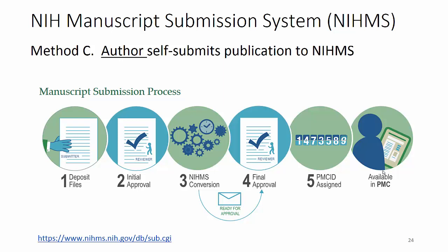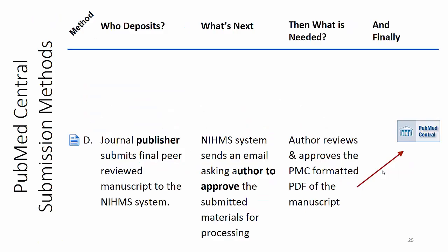Method D is somewhat similar to Method C — it's all about the NIH manuscript system, except you're probably not going to be involved in this one because the journal does the initial deposit. Just like with C, the author reviewer has to go in and approve that submission. The conversion happens, the author gets emailed again to make sure it's formatted exactly as they want it, and then it gets into PubMed Central.